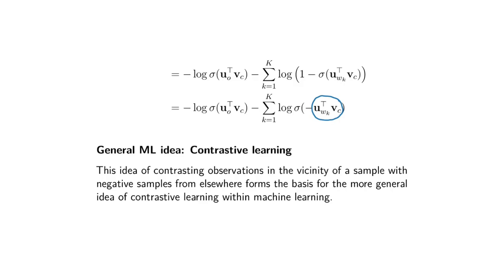This actually corresponds to a more general idea within machine learning called contrastive learning, where the goal is to push together observations that occur close to each other — in this case, the context word and center word — while at the same time pushing away the center word from negative samples that don't occur in the current vicinity. Models like contrastive predictive coding also rely on this basic principle of pushing together things that are close, while pushing away things that don't occur in the current vicinity.